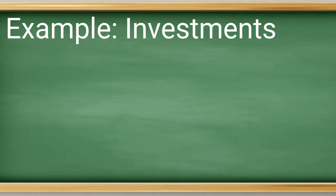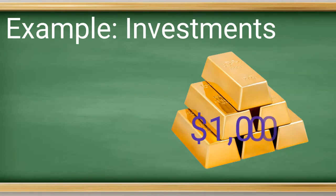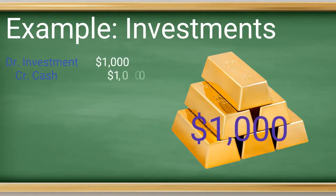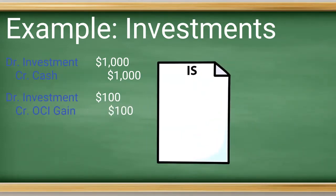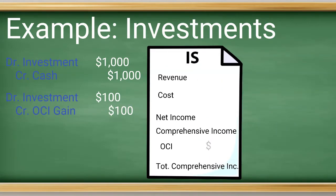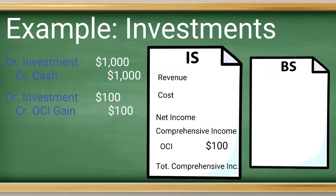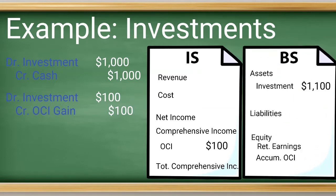So let's look at what the entries would look like. Let's say you bought an investment for $1,000 — your entries would be a debit to investment and a credit to cash. Then let's say your investment went up in value by $100. Your entry would be a debit to investment for $100 and a credit to OCI gain. This amount will show up below net income in the comprehensive income statement, but it will be transferred to the balance sheet separate from retained earnings in a balance sheet account called accumulated OCI.